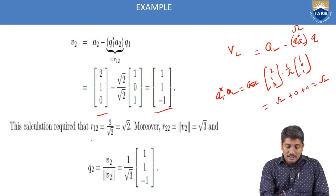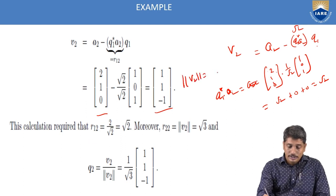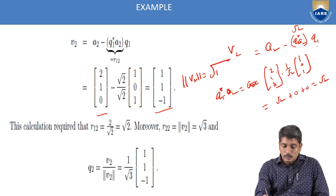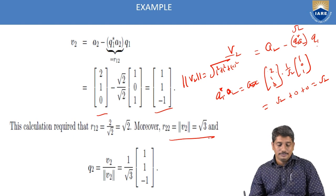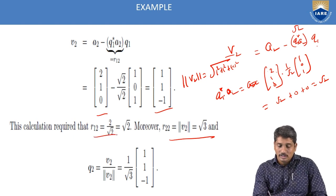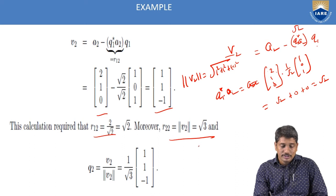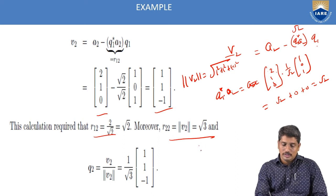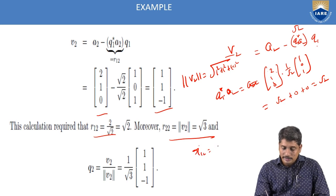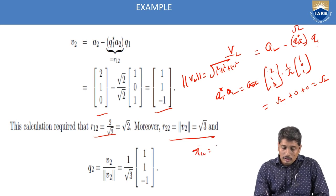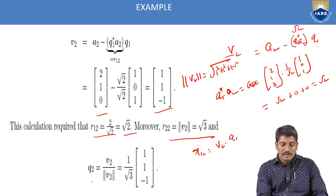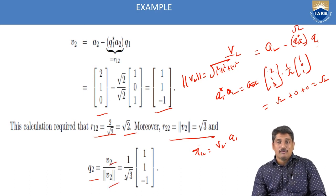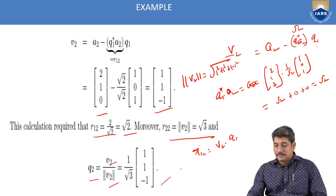We then calculate norm(V2), which involves √(1² + 1² + (−1)²), and R22 = norm(V2). R12 is the dot product of Q1 with A2, which gives √2. Finally, Q2 = V2 / norm(V2), giving us the second orthonormal vector Q2.